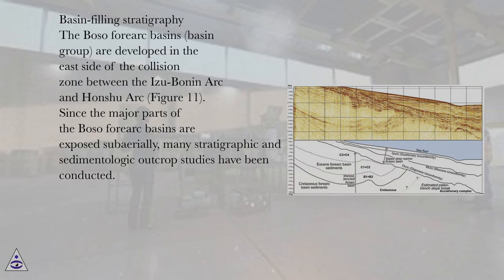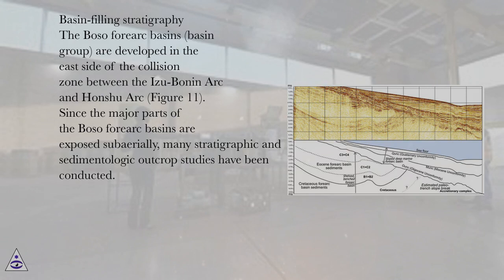Basin Filling Stratigraphy — the Boso Forearc Basin Group is developed on the east side of the collision zone between the Izu-Bonin Arc and Honshu Arc, as shown in Figure 11. Since the major parts of the Boso Forearc Basins are exposed subaerially, many stratigraphic and sedimentologic outcrop studies have been conducted.